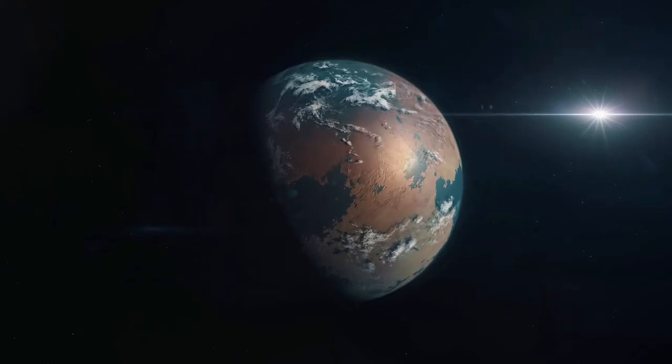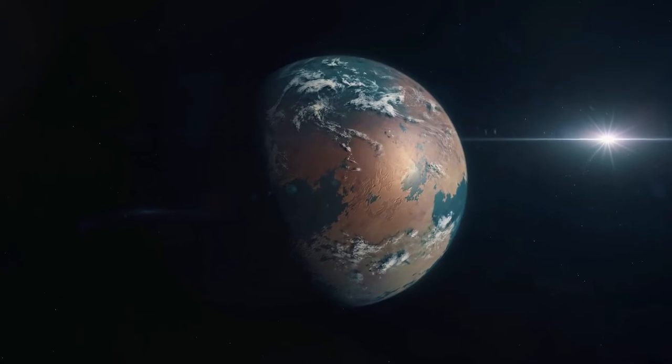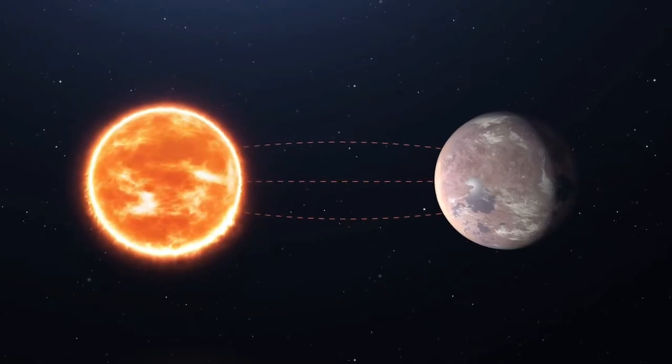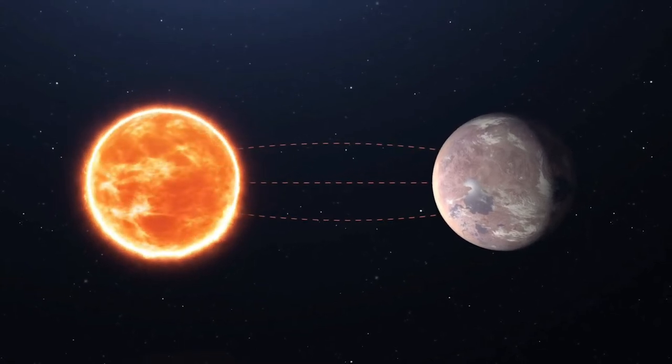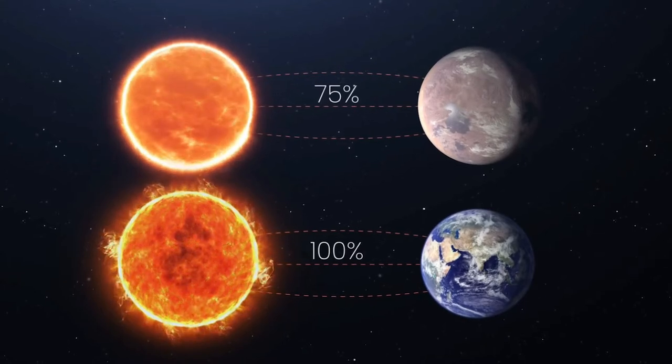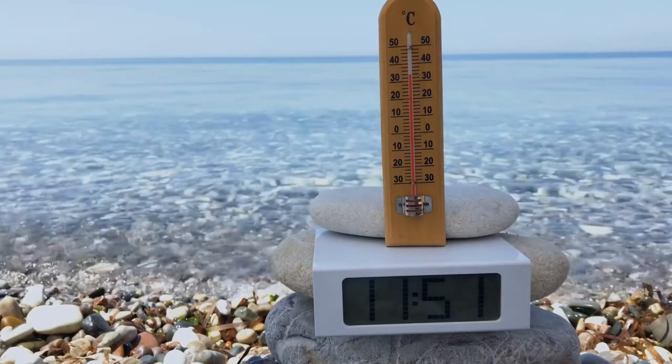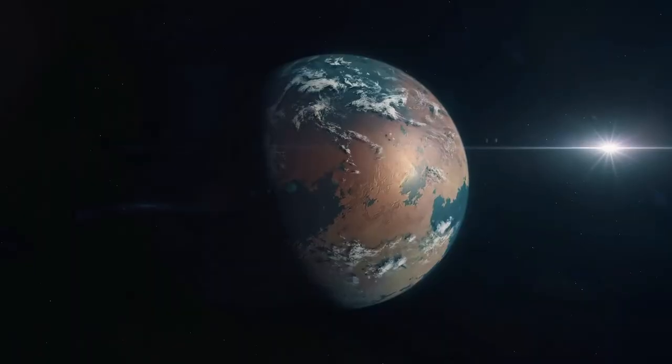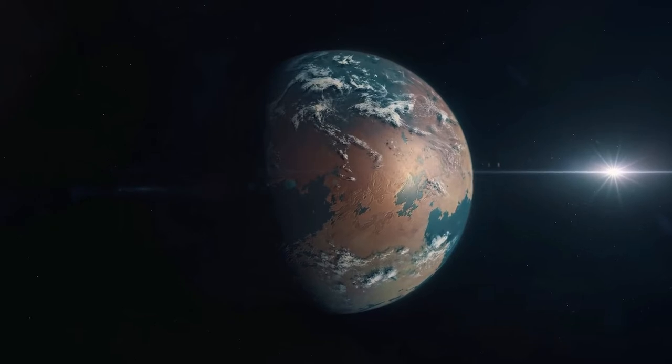This newly revealed world is only 1.06 times larger than our own planet. Also, the amount of starlight it receives from its host star, which is also a red dwarf, is 75% of the amount of light Earth receives from our Sun, meaning the exoplanet's temperature may be similar to our planet's as well.